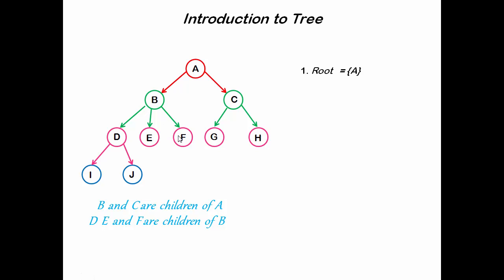It's just like a family relationship. You can see here, B is the child of A and parent of D, E, and F and grandparent of I and J.